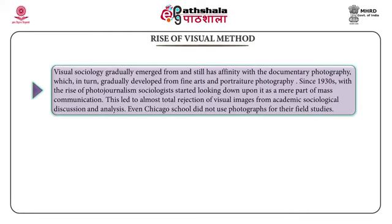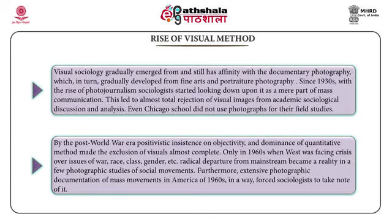Since the 1930s, with the rise of photojournalism, sociologists started looking down upon it as a mere part of mass communication. This led to almost total rejection of visual images from academic sociological discussion and analysis. Even the Chicago School did not use photographs for their field studies. By the post-World War era, positivistic insistence on objectivity and dominance of quantitative method made the exclusion of visuals almost complete.